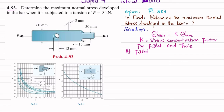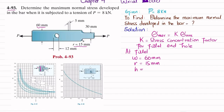For the fillet, we need the ratios r/h and w/h. From the given bar geometry: w is the larger height, which is 60 mm; r is the radius of the fillet, which is 15 mm; and h is the smaller height, which is 30 mm.